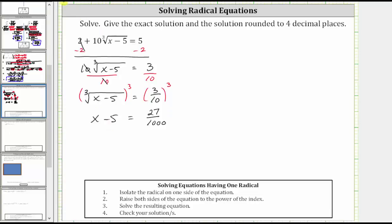And now to solve for x, we add five to both sides. Simplifying, negative five plus five is zero. We have x equals 27 over 1000 plus five over one.